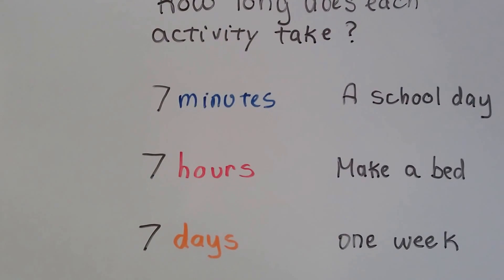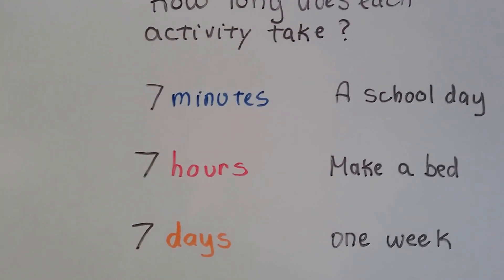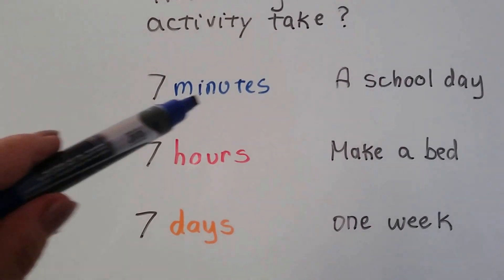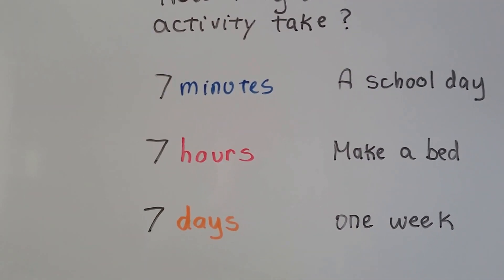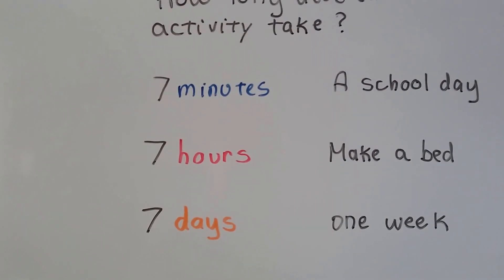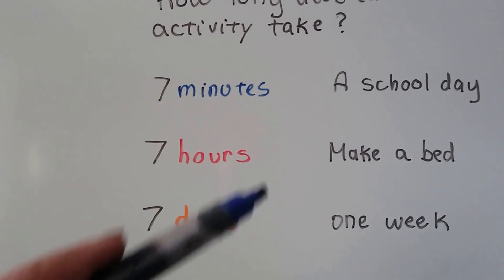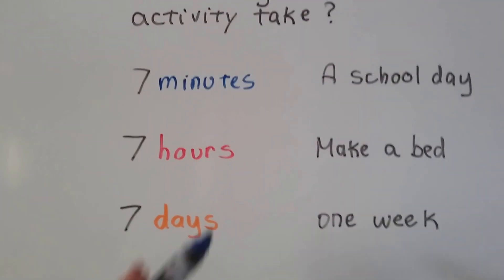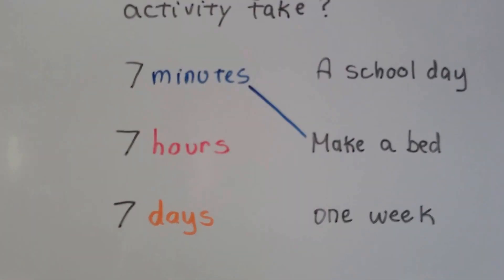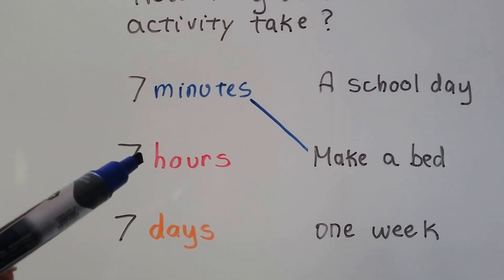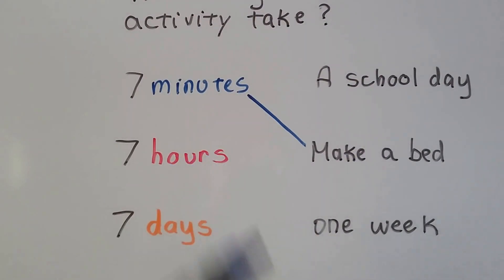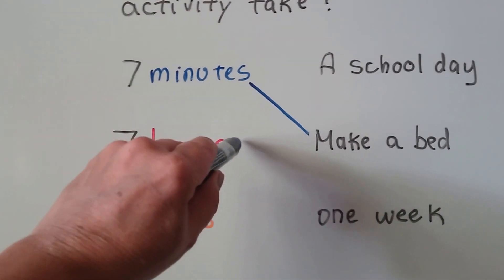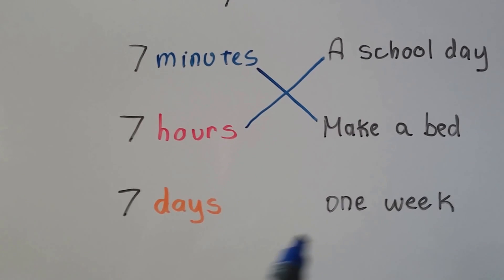Let's try this again. How long does it take to do each of these activities? We've got seven minutes, seven hours, and seven days, with activities: a school day, make a bed, or one week. A minute is about how long it takes to count to sixty — if you counted to sixty seven times, would the school day be over? No. Does it take about seven minutes to make a bed? Yes, maybe even five minutes. Is seven hours a school day? Yes! And that means seven days is one week.